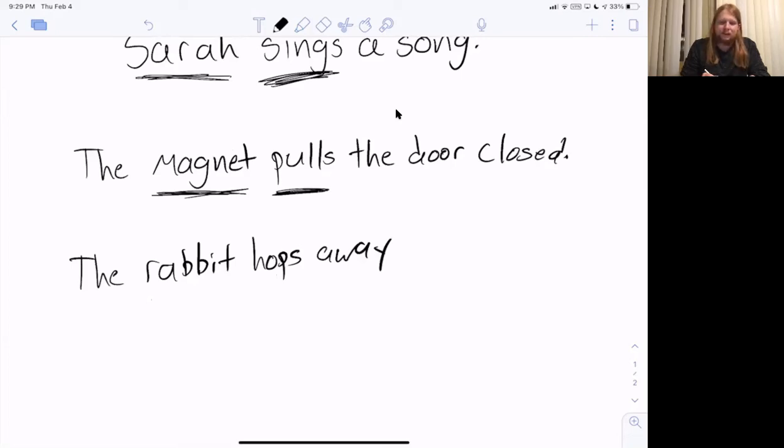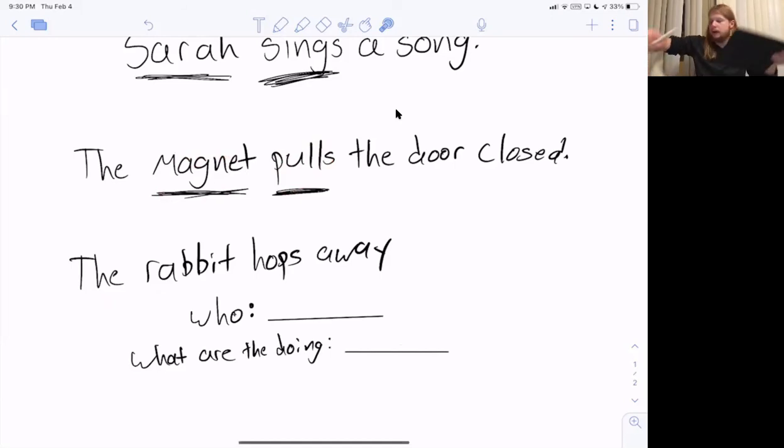Now what we're going to do is you guys are going to try this one on your own. So I want you to, in your seesaw or your notebook, I want you to put the words - who, for who is this sentence about? And you're going to say who this sentence about. And then what are they doing? I want you to write that. And then I want you to tell me what they're doing. So just like here, the who here was the magnet. And what they are doing is pulls. So you're going to figure that out with the rabbit hops away. So go ahead and pause your video.